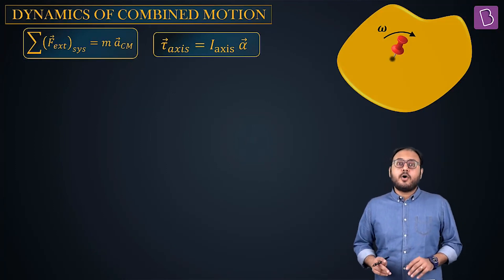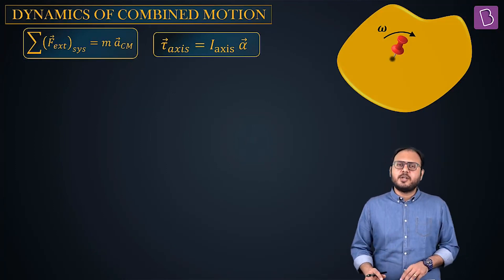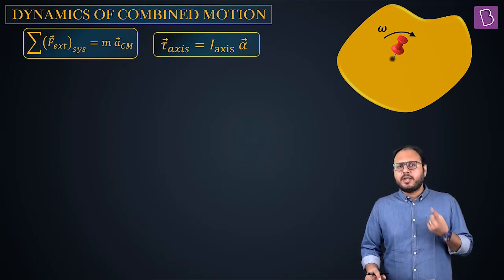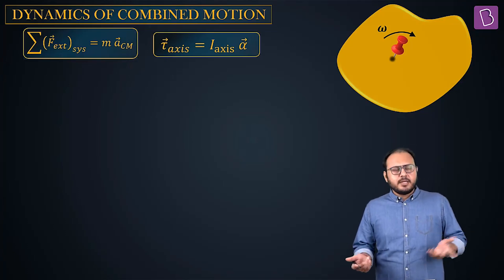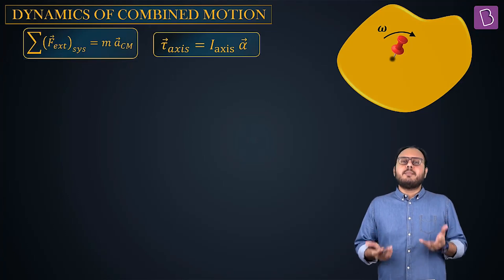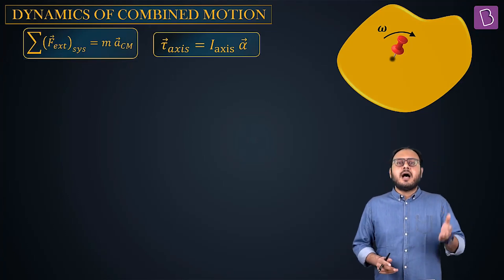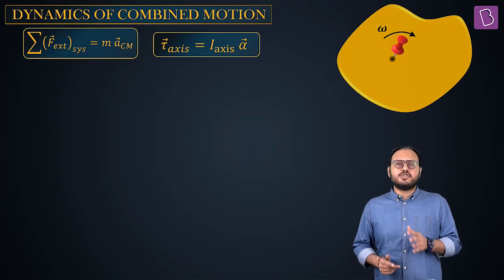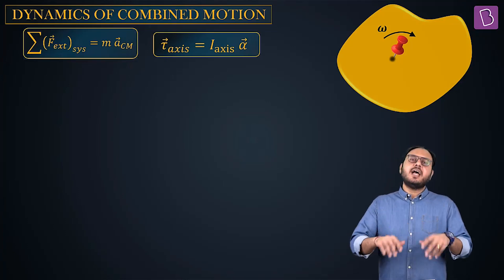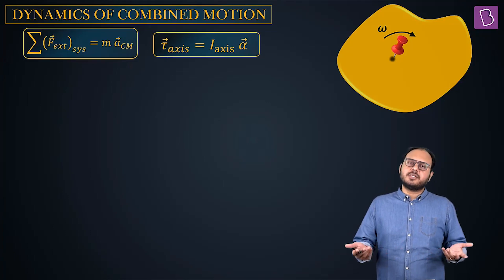For pure rotation or analysis of hinge systems, what did I tell you? Four things. Torque about hinge equal to I about hinge into alpha. F external equal to Ma_CM, where it will divide into two parts: A radial, A tangential. And half I omega square about hinge was the rotational kinetic energy and the total kinetic energy and energy conservation.